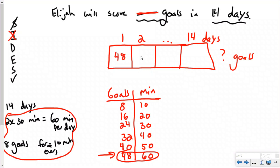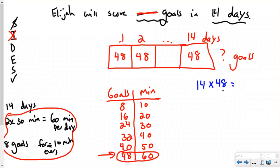Now I can fill in what was missing in my tape diagram. My repeated addition is 48 plus 48, fourteen times — which is really 14 groups of 48, because when you use repeated addition for multiplication, the times sign means groups of. So I need to solve 48 times 14 to find how many total goals Elijah scored.